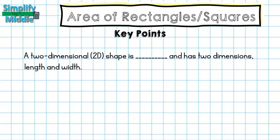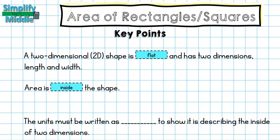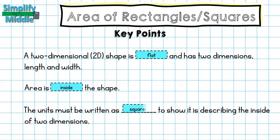So let's recap some key points. A two-dimensional shape is flat and has two dimensions being length and width. Area is going to be inside the shape, and the units must be written as squared to show it is describing the inside of the two dimensions.